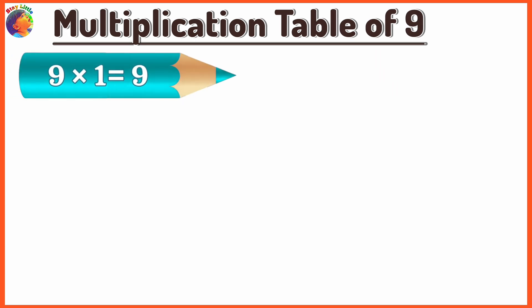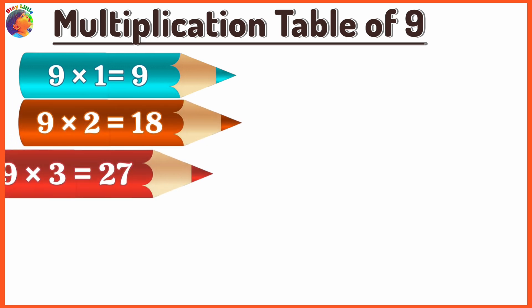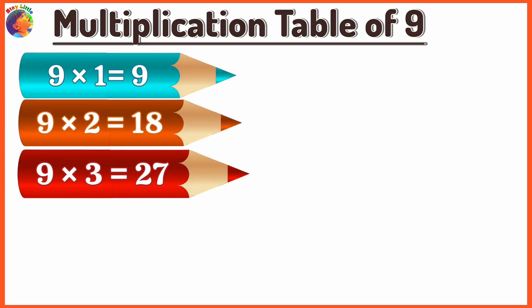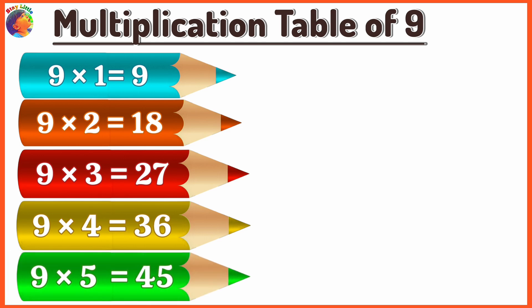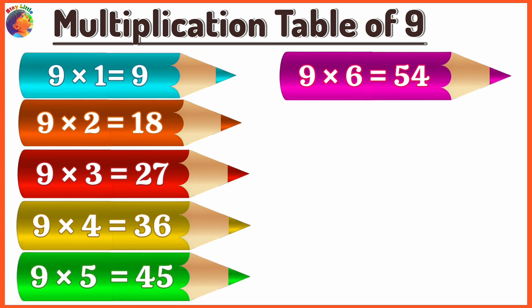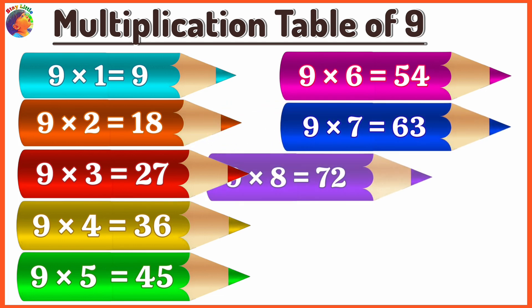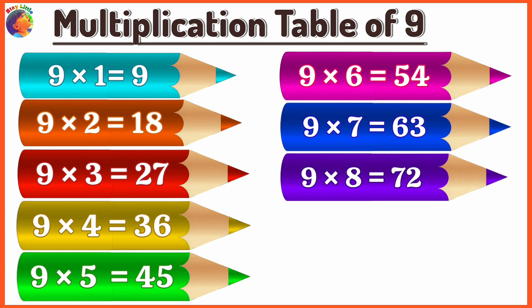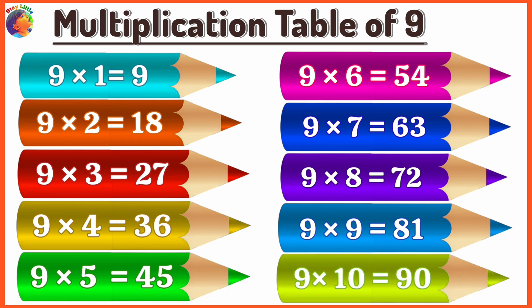9 x 1 is 9, 9 x 2 is 18, 9 x 3 is 27, 9 x 4 is 36, 9 x 5 is 45, 9 x 6 is 54, 9 x 7 is 63, 9 x 8 is 72, 9 x 9 is 81, 9 x 10 is 90.